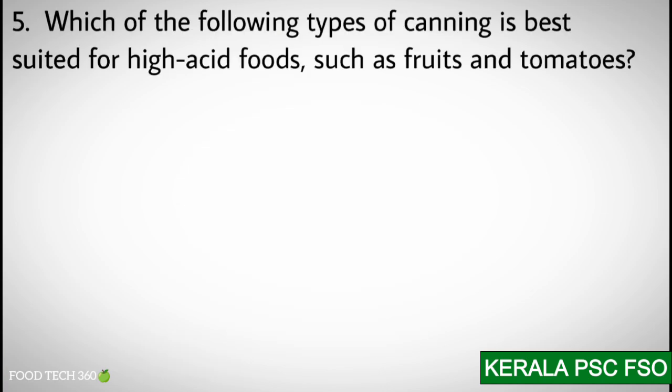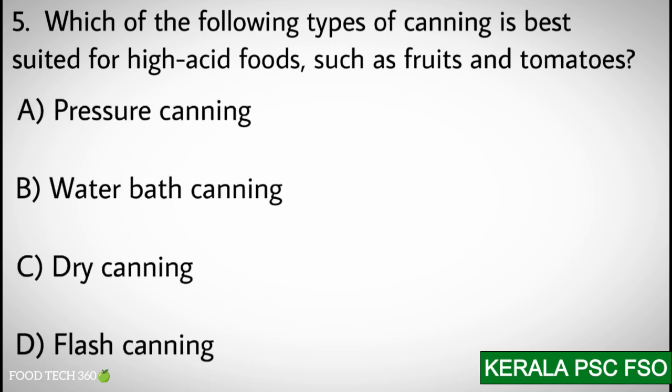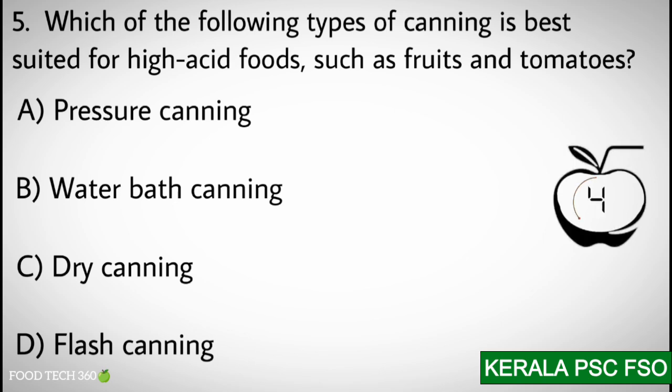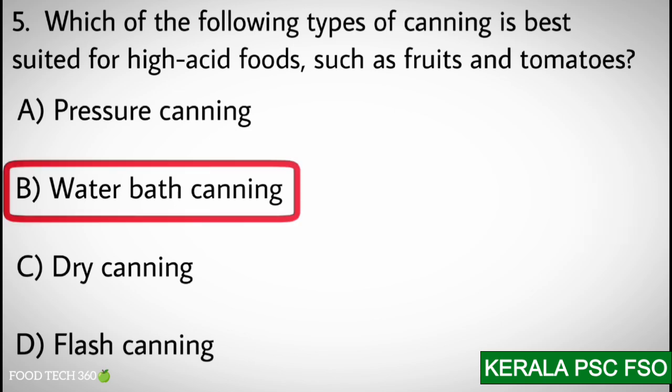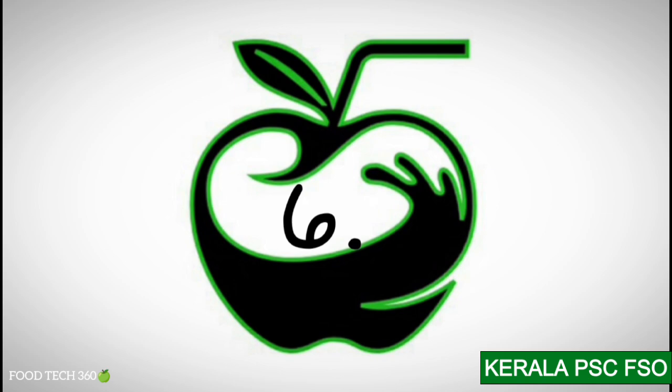Q5. Which of the following types of canning is best suited for high acid foods such as fruits and tomatoes? Options: A) Pressure canning, B) Water bath canning, C) Dry canning, D) Flash canning. Correct answer: B) Water bath canning, as it kills spores of Clostridium botulinum.